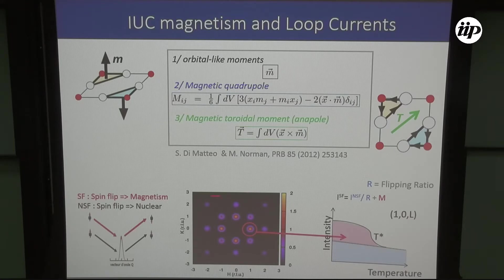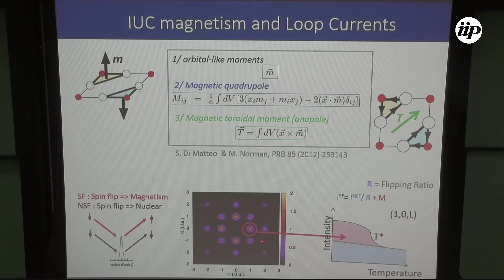The idea is to do the measurement as a function of temperature and look at what happens in the spin-flip channel. You expect a background due to leakage from the non-spin-flip channel because the beam polarization is not perfect. If lucky, at T* you should observe an additional signal — the magnetic signal. And indeed, in YBCO with 12% doping, at a temperature no higher than T*, we observe on the (0,1,1) reflection a magnetic signal exactly as expected in Chandra Varma's loop current model.